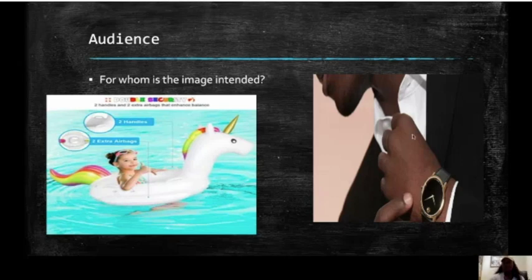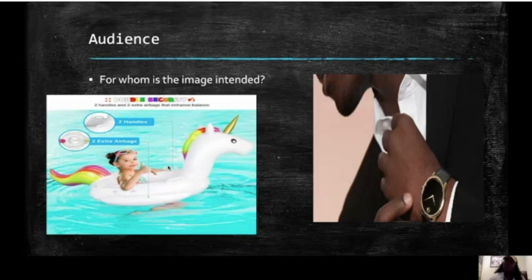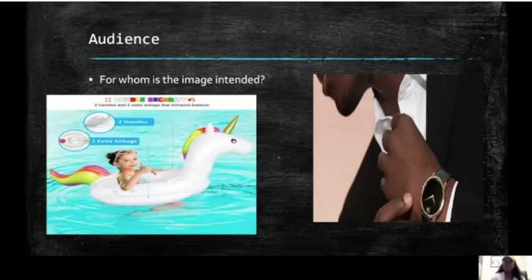Then look at this one on the right to contrast. We have a watch on what is actually a man's hand. Who's the audience for this? Is it the same audience as in the unicorn picture? Probably not. Look how the man is dressed. The audience possibly might be business people who want a nice watch, who want to tell time. Possibly shopping for themselves or for someone else. So these two images show a contrast in who the audience is, but it's always important to think about who is the person looking at the picture.